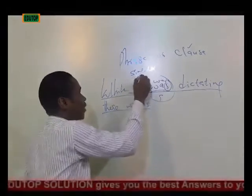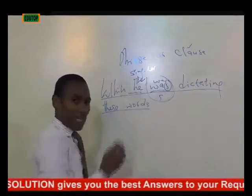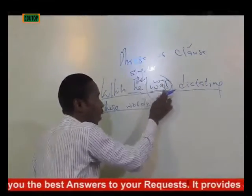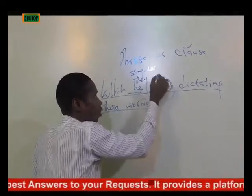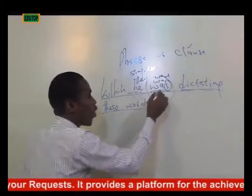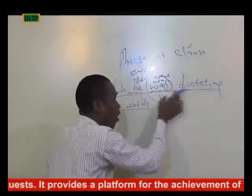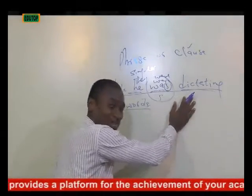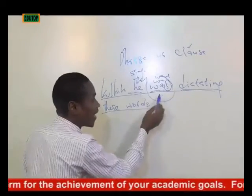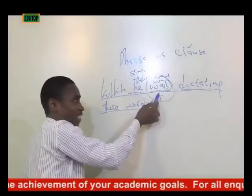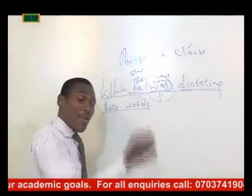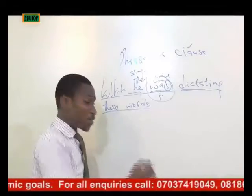Even if we changed the subject to 'they' — a plural subject — 'dictating' would remain unchanged; only 'was' would change to 'were.' So 'was' is finite and 'dictating' is non-finite. You should know that virtually all the primary auxiliary verbs are finite verbs. The presence of the primary auxiliary 'was' in this structure makes it a clause.